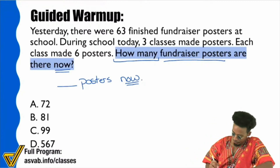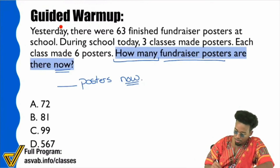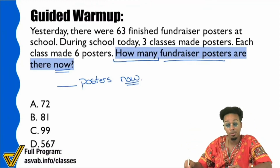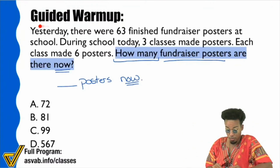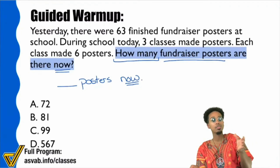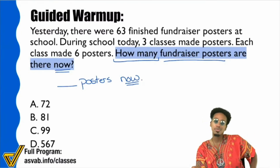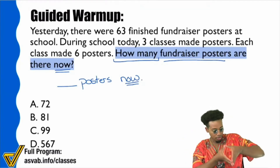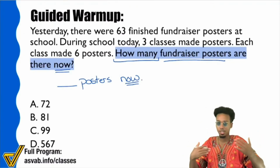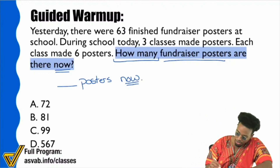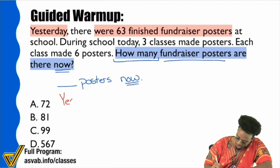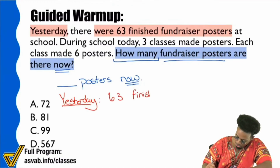The problem starts with 'Yesterday' — and the moment you saw the question say 'how many fundraiser posters now' and the problem starts with 'yesterday,' you know you're going to have to build a timeline from start to finish. It says: 'Yesterday, there were 63 finished fundraiser posters.' So let's write that down — yesterday, we had 63 finished posters.